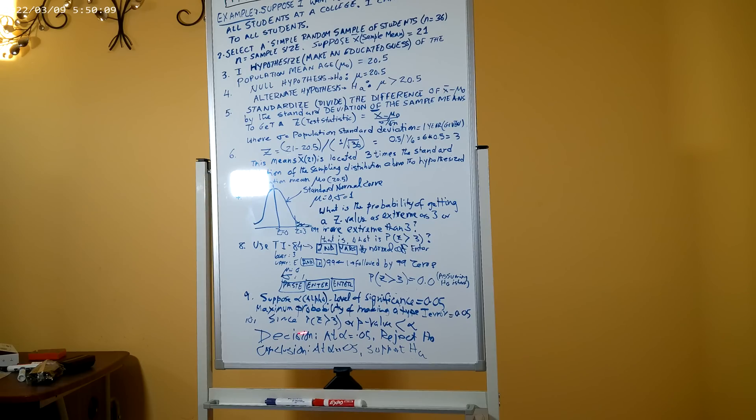Now the p-value, or the probability of z greater than 3, is 0.001, which in this case is less than the alpha value of 0.05. Therefore, our decision is: at alpha equal to 0.05, reject H0. And our conclusion is: at alpha equal to 0.05, there is enough evidence to support the alternate hypothesis that mu is greater than 20.5.